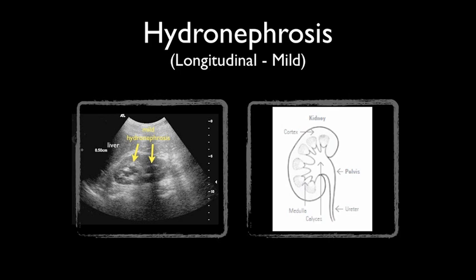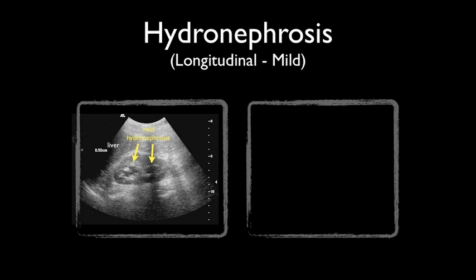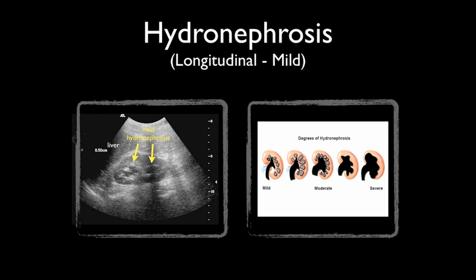Hydronephrosis is the distension and dilation of the renal pelvis and calyces, usually caused by obstruction. Untreated, it can lead to progressive atrophy of the kidney. As you can see from this renal ultrasound, the central portion — the medulla — has multiple dark areas that could be confused with cysts. But upon fanning the ultrasound probe, you can actually see these structures coalescing to form dilated calyces. Comparing this ultrasound to our cartoon rendition, you can see that the image represents mild hydronephrosis.